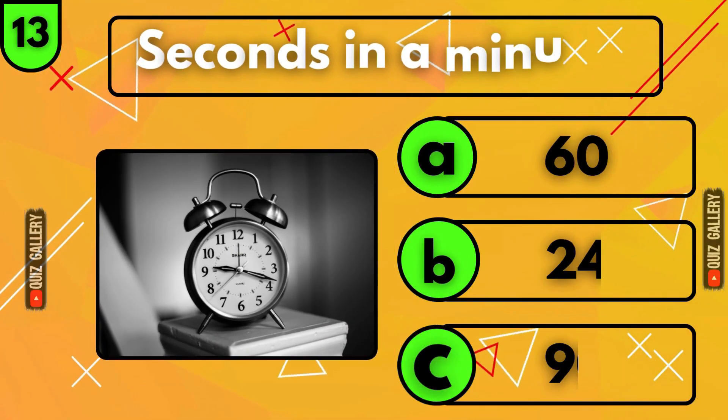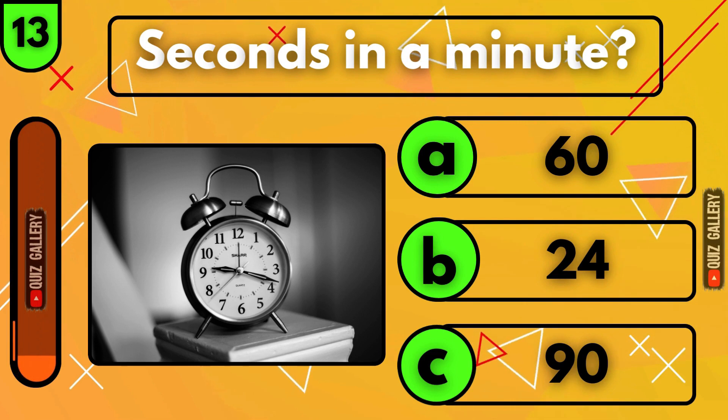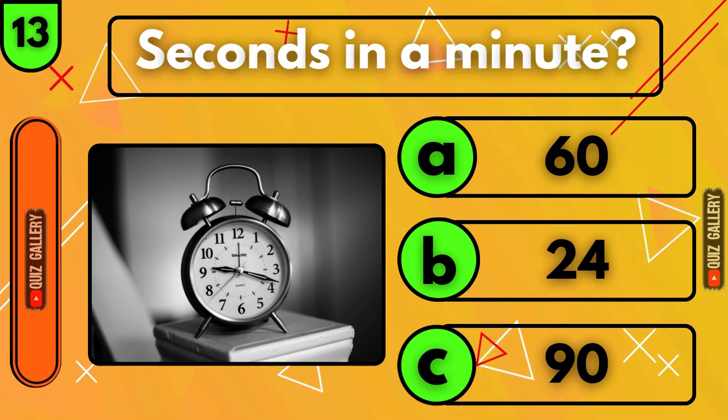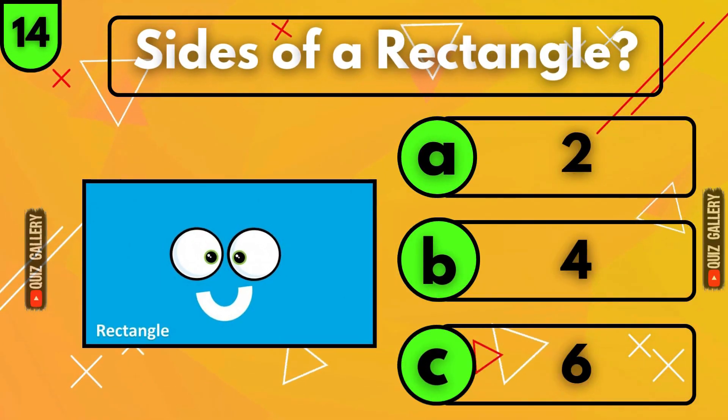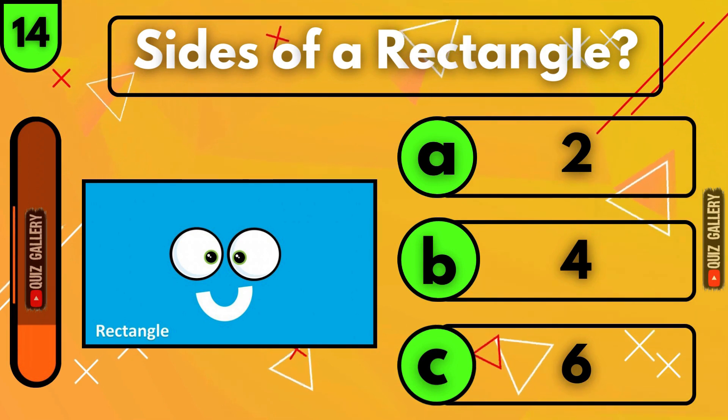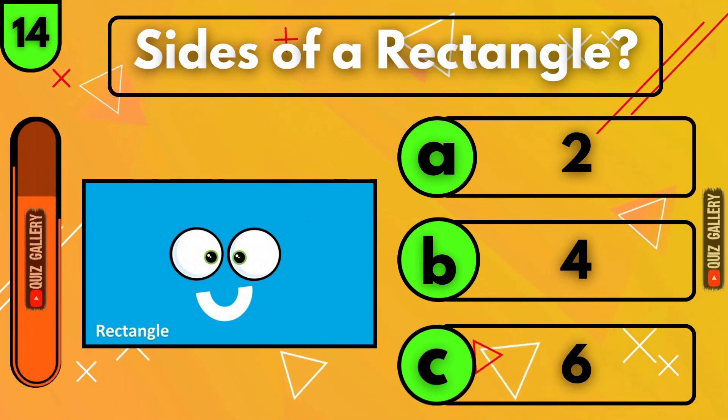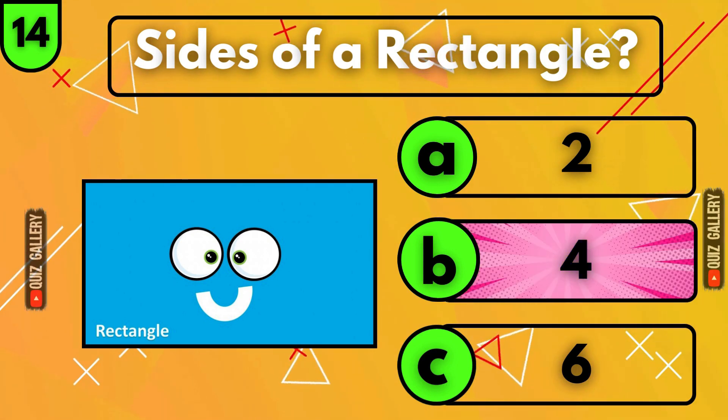How many seconds are there in a minute? Sixty seconds! How many sides does a rectangle have? Four sides!